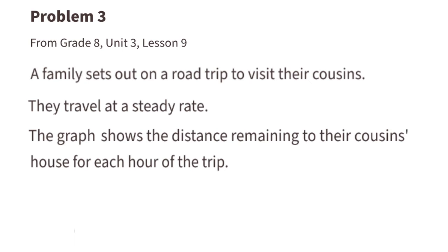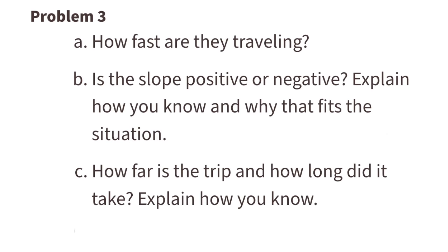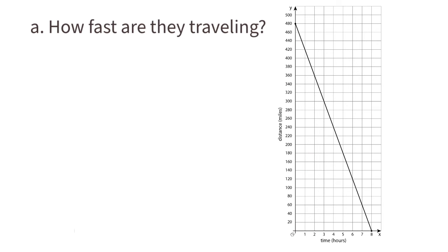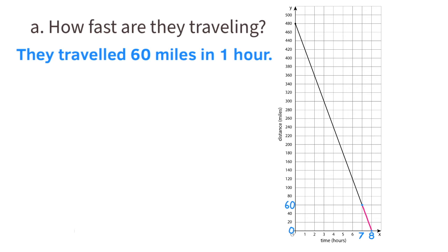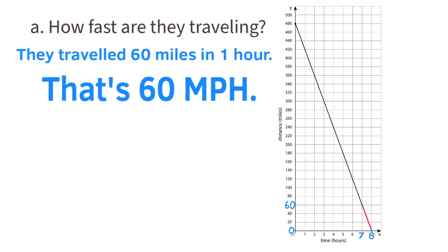Problem number three from eighth grade, unit three, lesson nine. A family sets out on a road trip to visit their cousins, traveling at a steady rate. The graph shows the distance remaining to their cousins' house for each hour of the trip. A: How fast are they traveling? The x-axis represents time in hours and the y-axis represents distance in miles. Between hours seven and eight, they traveled from zero miles to sixty miles, meaning they're going sixty miles per hour.